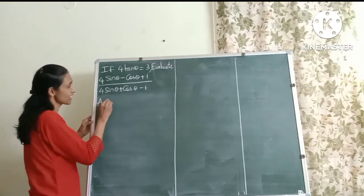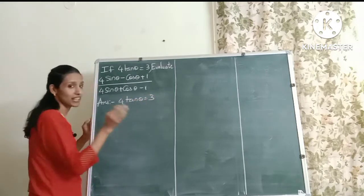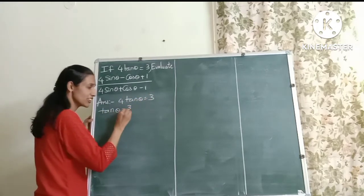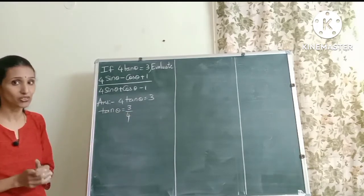What is given to us is that 4 tan θ equals 3. Now that means tan θ equals 3 by 4. Now using this value, I have to find sin θ and cos θ.